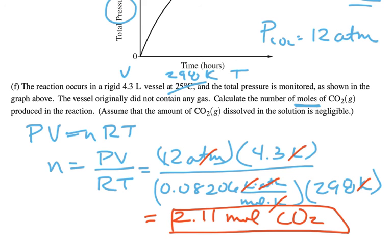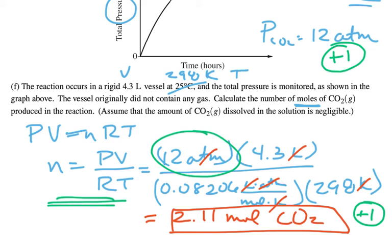Now, this is a two-point problem. You get one point for getting to this answer. And you get one point for realizing that the pressure that you're going to use is only 12 atmospheres, not 24. So, if you miss that part and use 24, you're going to get double this answer. But you're still going to get one point because you're doing the right thing with the wrong value here. So, two-point problem, one for getting the 12 atmospheres of CO2, and the second for using PV equals NRT to get the number of moles.